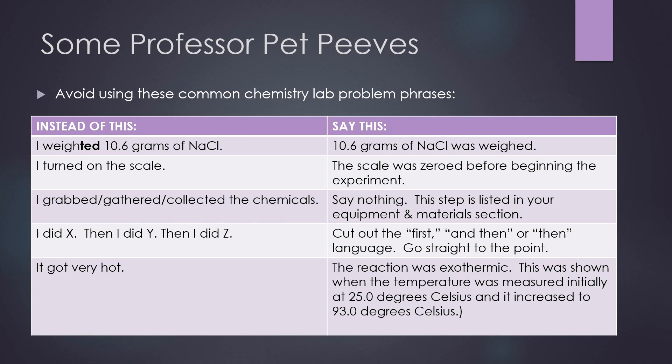Finally, you've heard this before. You don't want to say something like, it got very hot. The word very is an unnecessary and unhelpful description. Instead, you want to be specific and use chemical language to say what you need to say. You can try. The reaction was exothermic. This was shown when the temperature was measured initially at 25.0 degrees Celsius and it increased to 93.0 degrees Celsius.